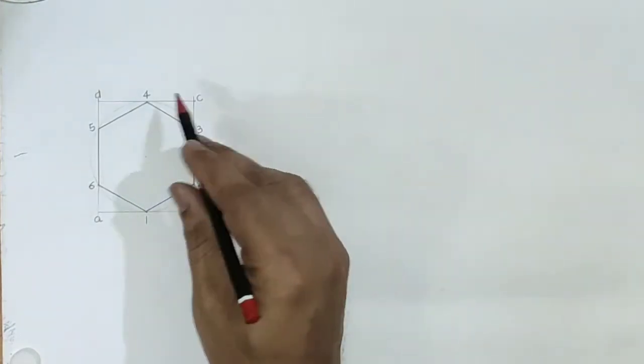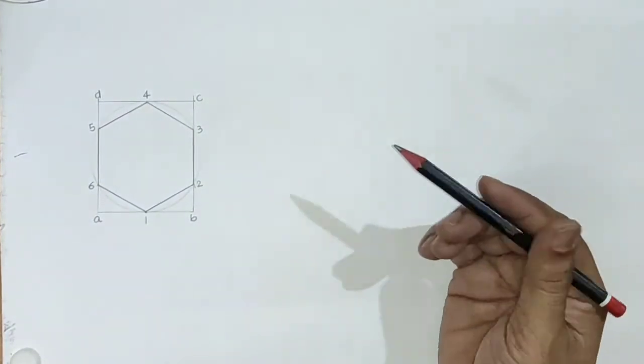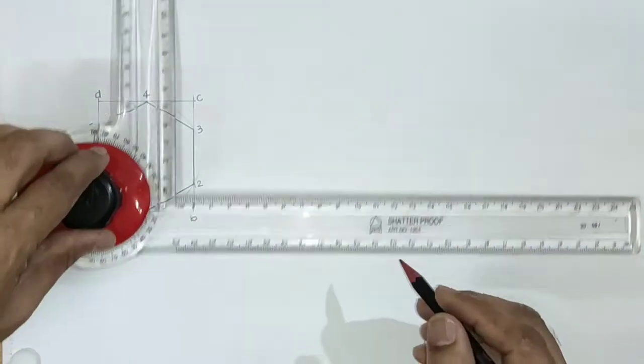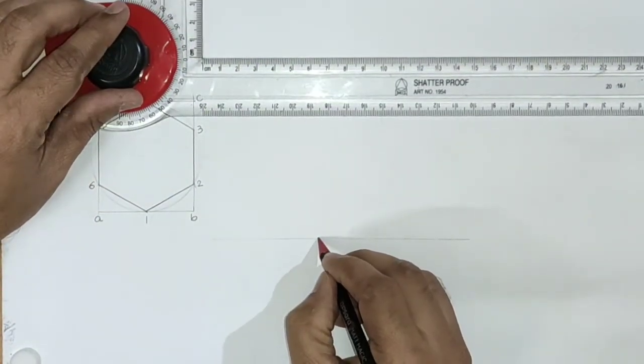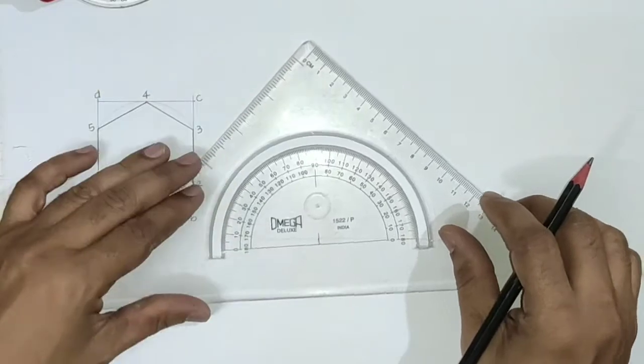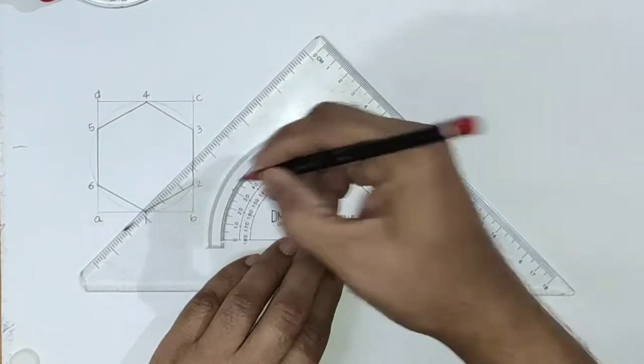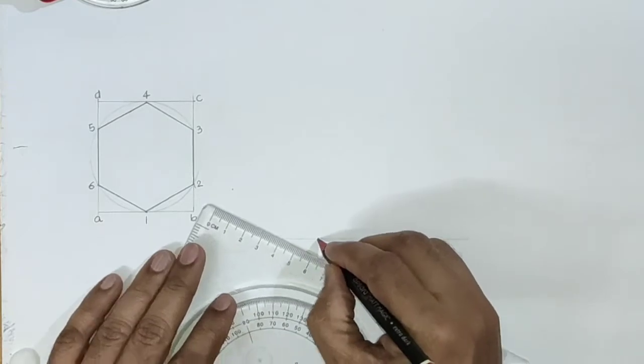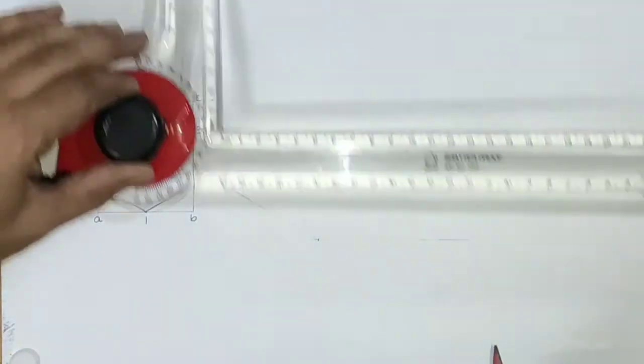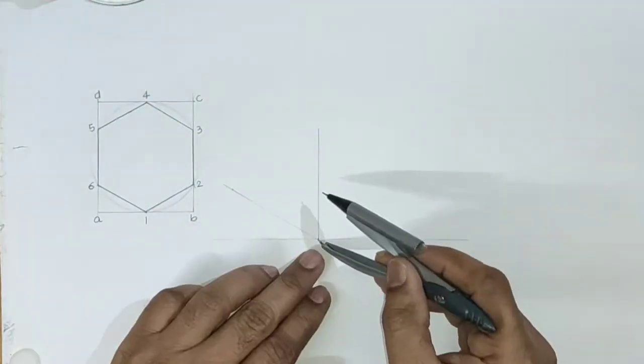To draw isometric of hexagon, first we have to draw isometric of this ABCD rectangle. It will be parallelogram in isometric view, so first draw horizontal line, take one point on this, draw line at 30 degree angle, then draw vertical line. This angle is 30 degrees.